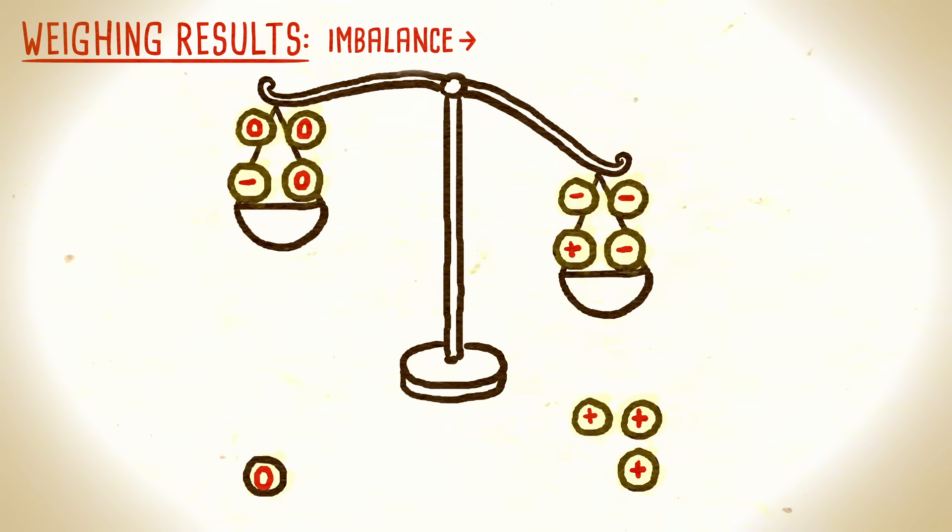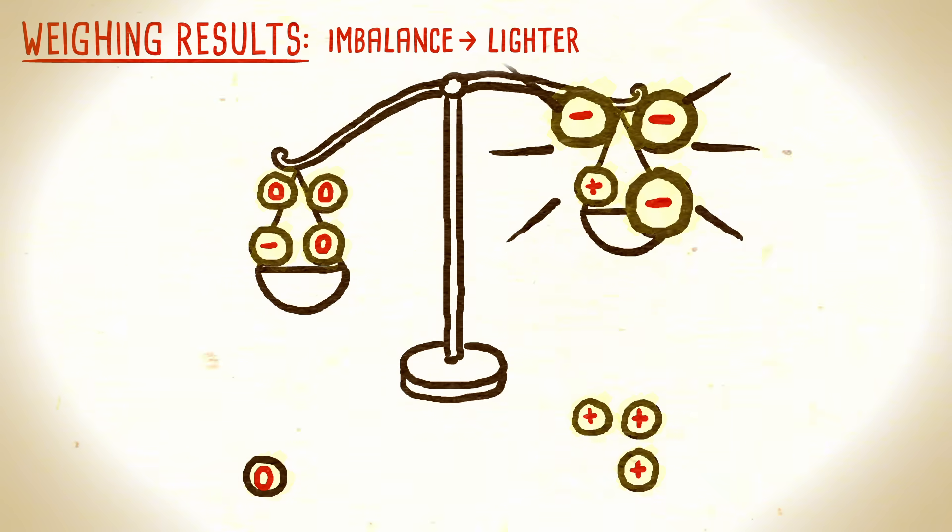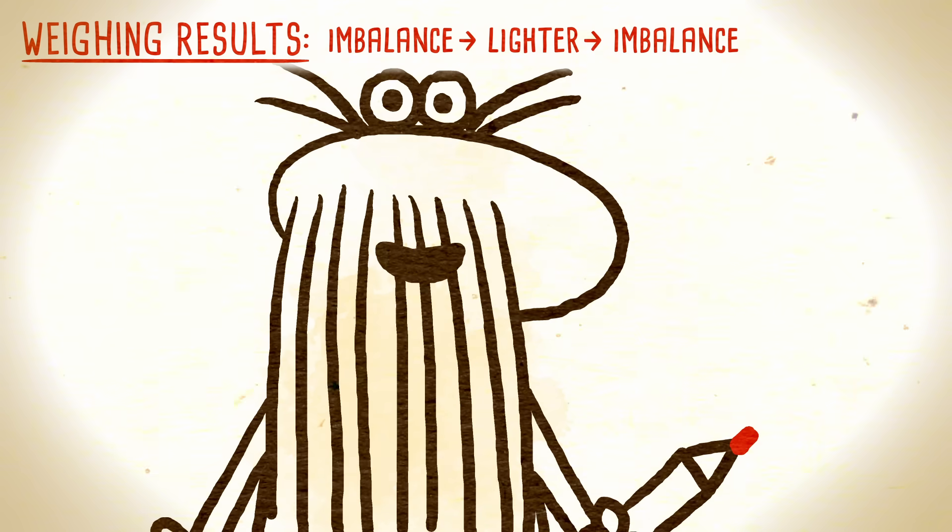If the previously heavier side became lighter, that means one of the three minus coins you moved is actually the lighter one. Weigh two of them against each other. If they balance, the third is counterfeit. If not, the lighter one is.